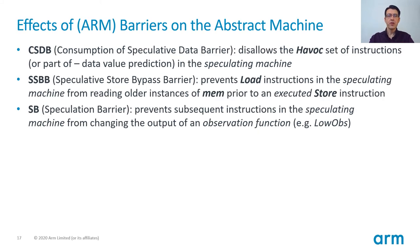For the disclosure of the speculation side channel vulnerabilities, the ARM architecture introduced new barriers to help with the software workarounds. In this model, we haven't included data value prediction in the speculating CPU, but that's equivalent to allowing the Havoc instruction set under speculation. CSDB prevents those instructions. SSBB does not allow a speculative load from reading values prior to a store, as mentioned in the Spectre Variant 4 example. SB disallows the set of instructions under speculation that may have an observable side effect.